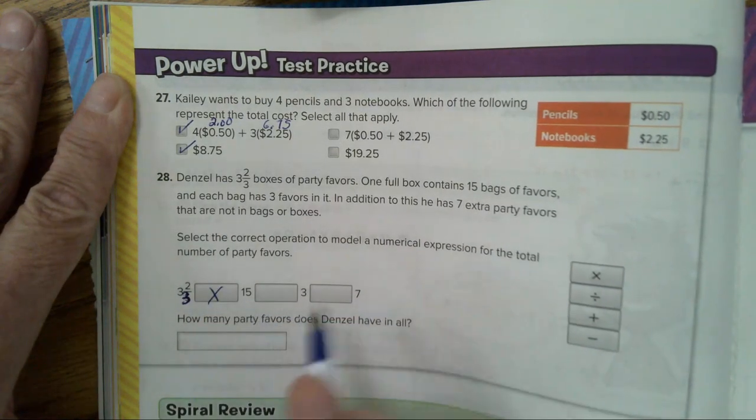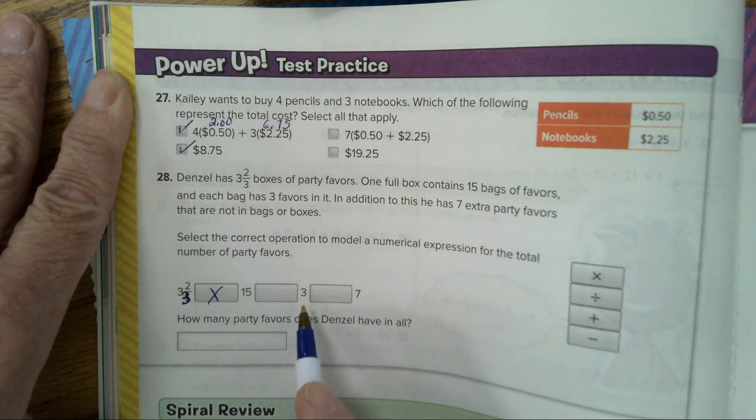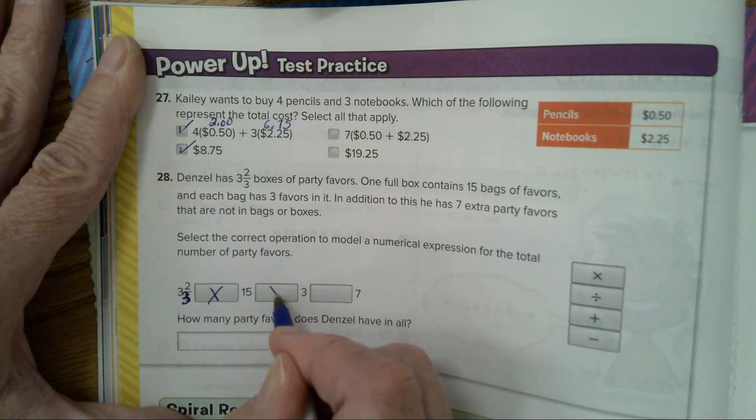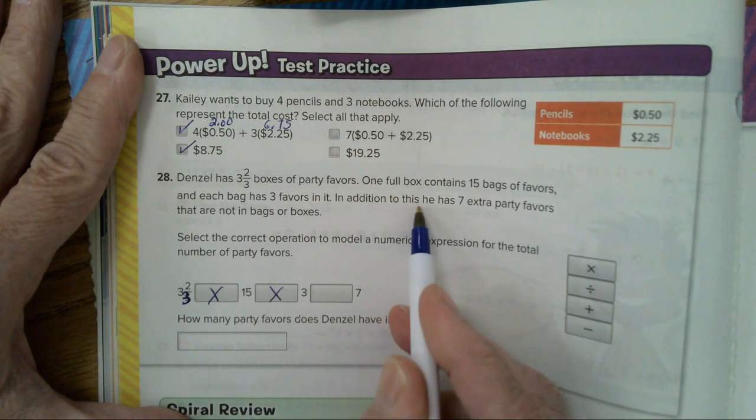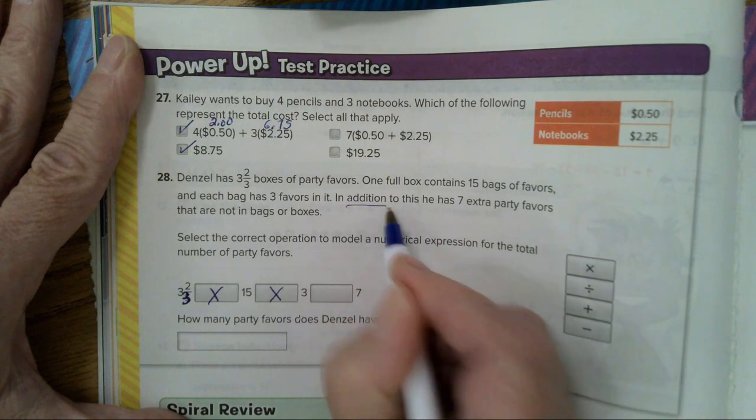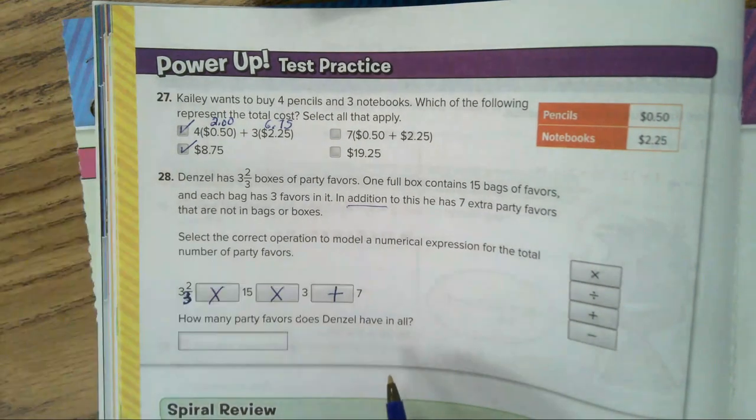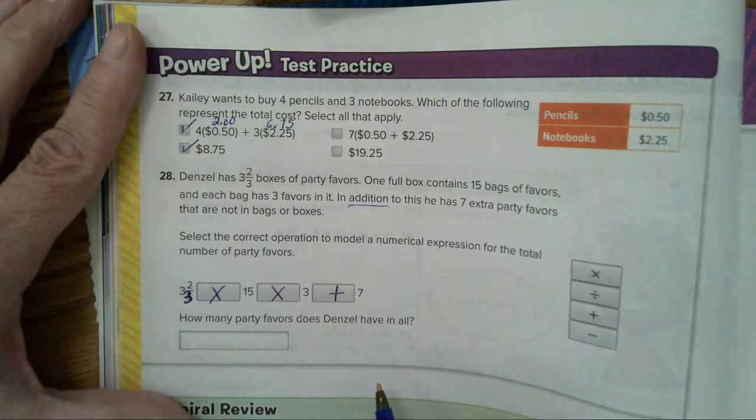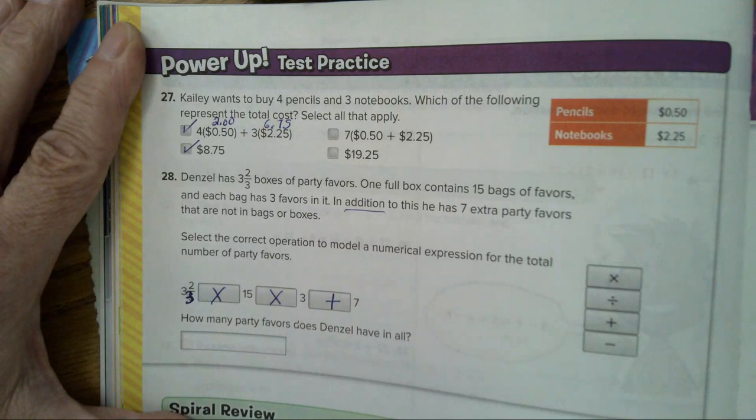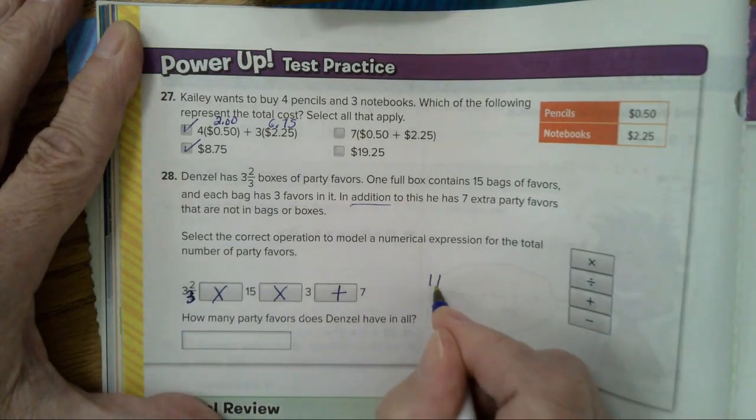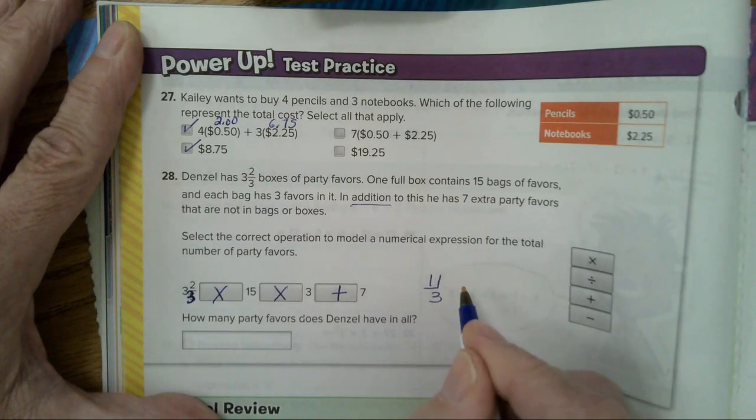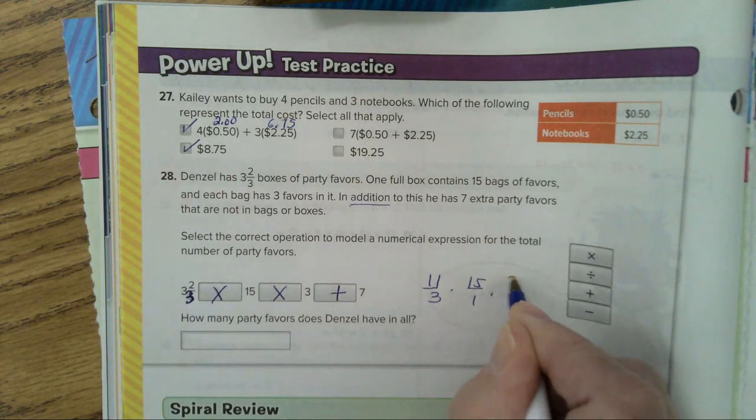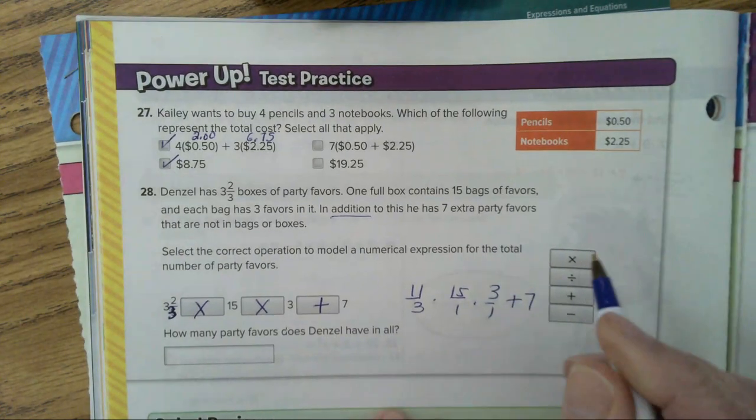Select the correct operation to model a numerical expression for the total number of party favors. So we need to select our operations and put it over that. So three and two thirds, let's put a three instead of a five on that. We're going to multiply it by 15. Then each one of those has three favors in it. So we're going to multiply it by three. And then you're going to add the seven.